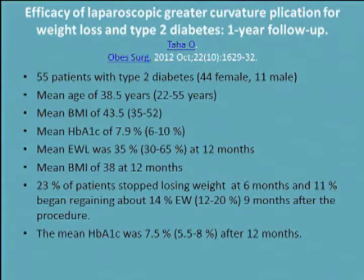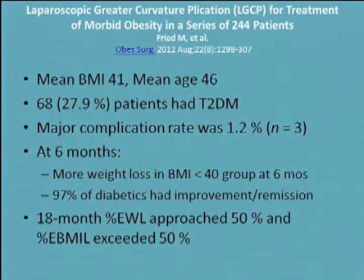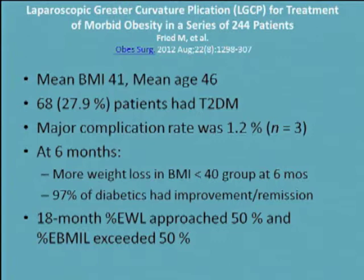A study by Martin Fried from Czech Republic looked at 244 patients, specifically examining their diabetic patients who comprised about 30% of the population. The major complication rate was 1%, which is reasonable. They saw improvement in diabetic patients — 97% had either improvement or remission by their criteria — with over 50% excess weight loss in the majority of patients at 18 months.